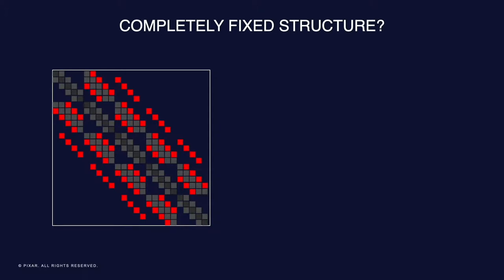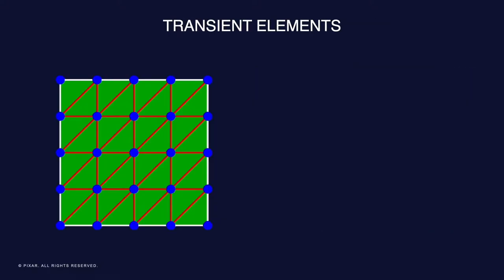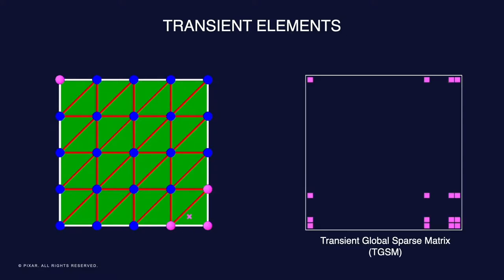Up to now I've told you our linear system structure is fixed — but I am altering the deal. FIS-T's linear system does not have a completely fixed structure. The majority of block entries are fixed, but a number of forces come and go during simulation, changing the sparsity pattern. Contact response between deformable objects and self-collision contact demand a transient representation. Our response generates implicit forces and block entries in the linear system. These transient elements do not have local storage for their forces or Jacobian blocks; instead they directly put their contributions into global structures with storage per thread to avoid locks. We creatively named this structure the Transient Global Sparse Matrix, or TGSM.